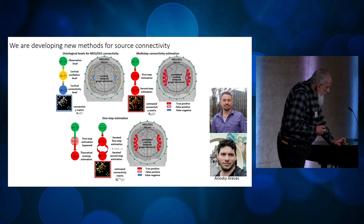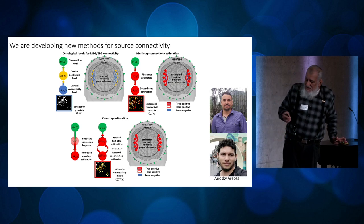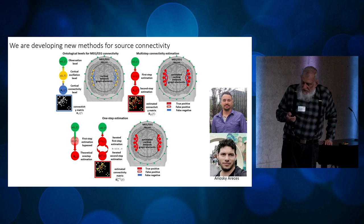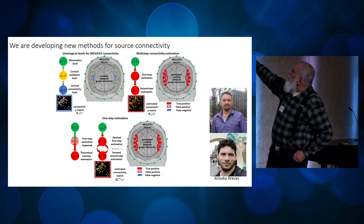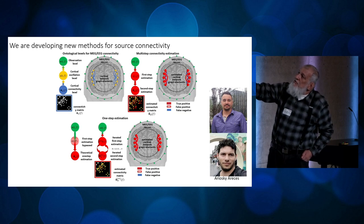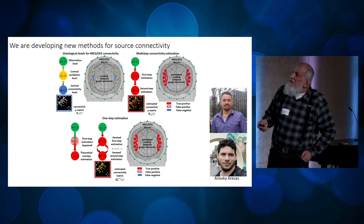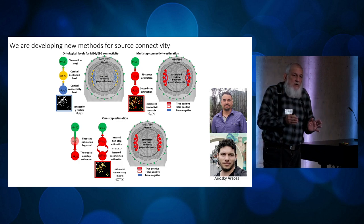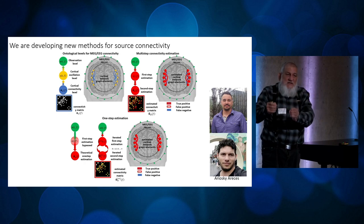Which directions are we moving in? First, we're moving towards new methods for the detection of source connectivity. The usual two-step method is to first do an inverse solution and then obtain a connectivity matrix from it. We show in a series of publications that this is wrong — when you obtain an inverse solution, you're assuming a prior that assumes connectivity between EEG sources, and that prior is misspecified.